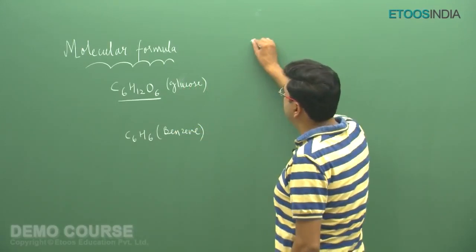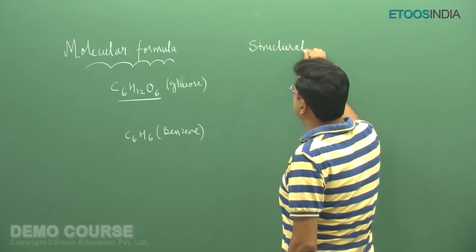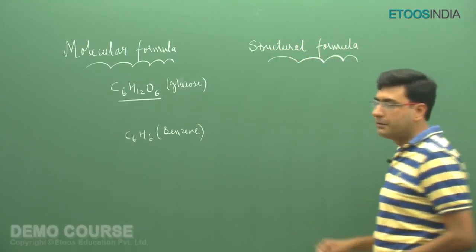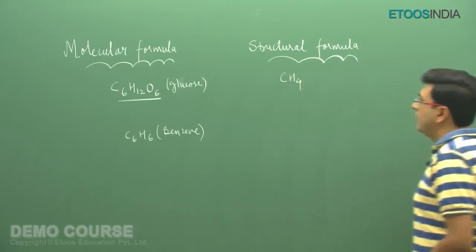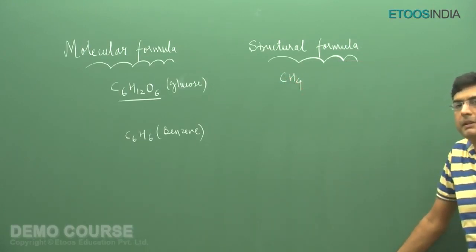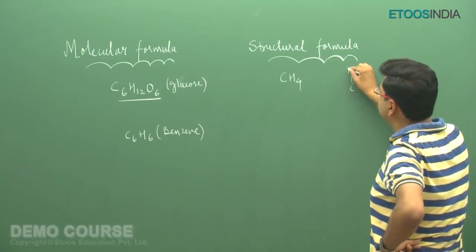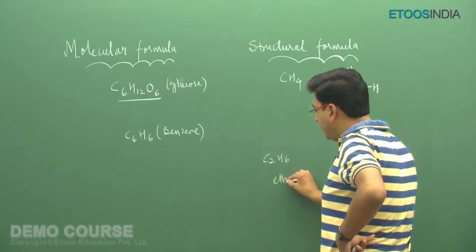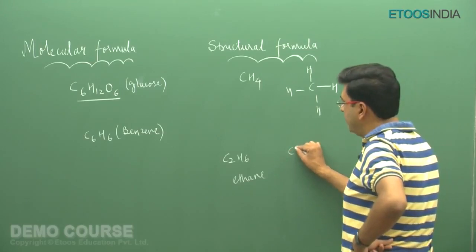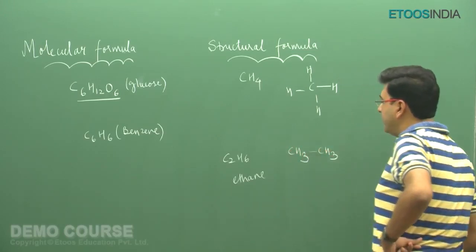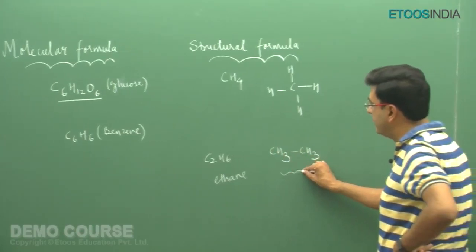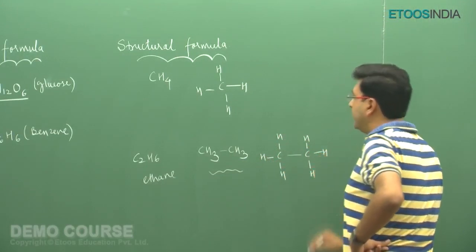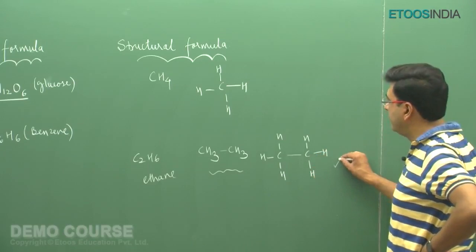That information is provided by the structural formula. The structural formula represents the connectivity between atoms. For example, in methane, one carbon atom and 4 hydrogen atoms are present. For ethane, the molecular formula is C2H6, and to show connectivity we can write CH3-CH3, where every carbon atom is connected to 3 hydrogen atoms and 1 carbon atom.